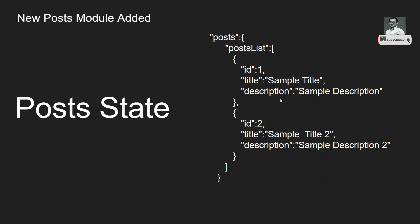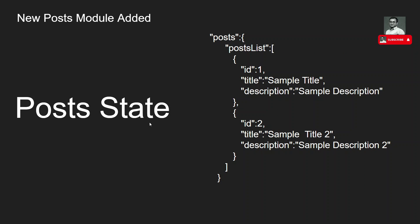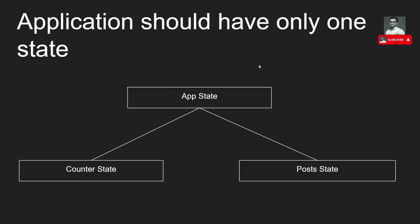The post list will have id, title, and description - it will be an array of posts. This is the post state we have planned. Now we have two states to maintain: the counter state and the post state. Since each application has only one state, what we will do is create one main state - the AppState. We will inherit both the counter state and the post state into this AppState, so everything will be accessible through it.